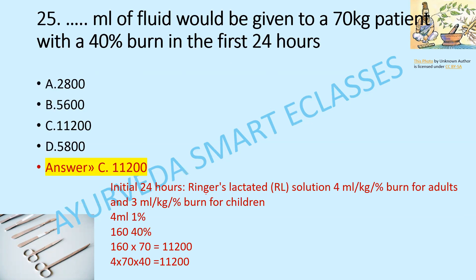Initial 24-hour Ringer's lactated solution: 4 ml per kg per percent burn for adults, and 3 ml per kg per percent burn for children. For this 70 kg adult patient with a 40% burn: 4 ml × 40% = 160 ml per kg.